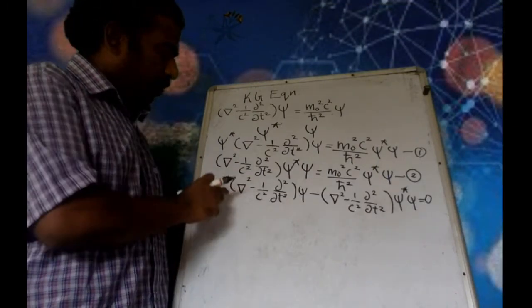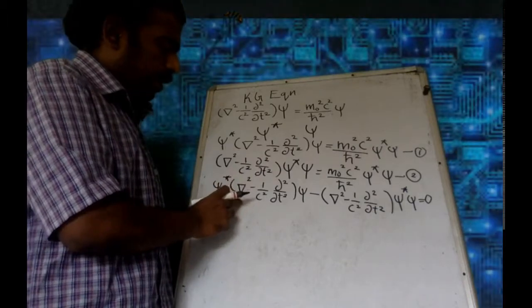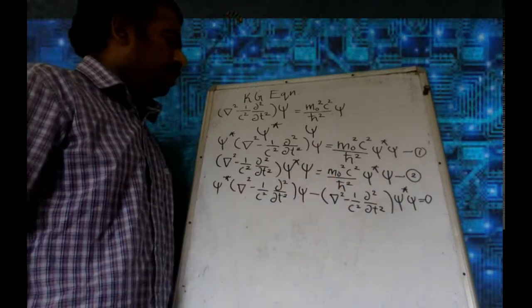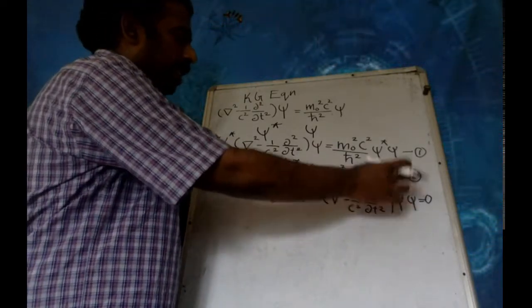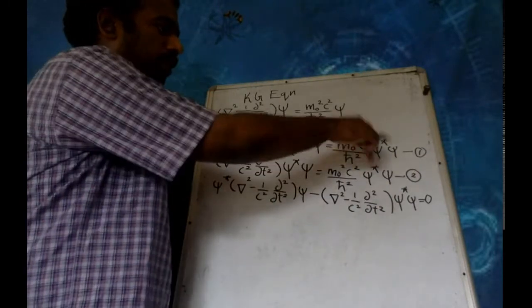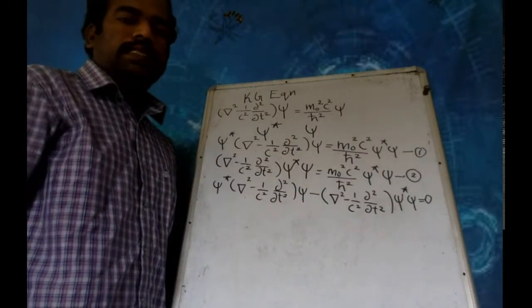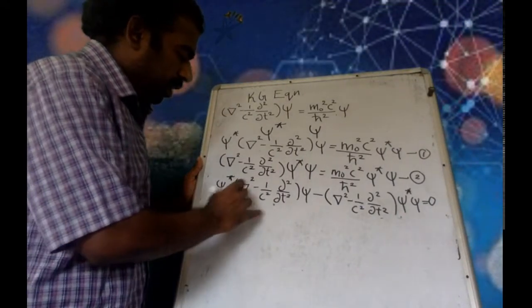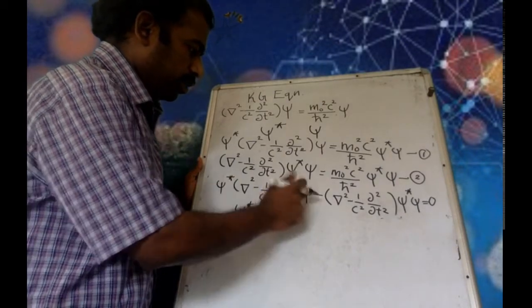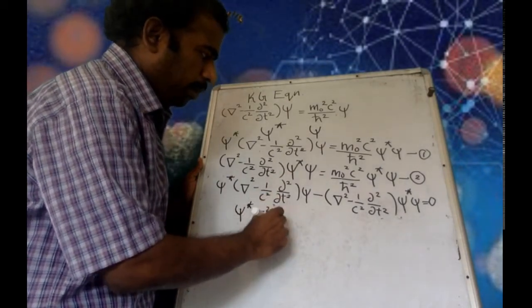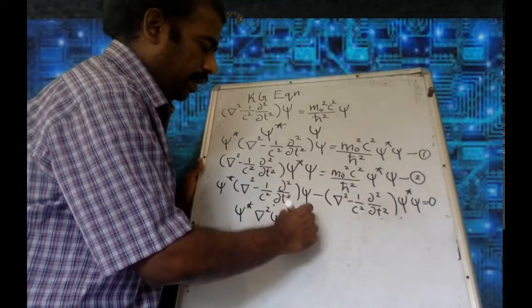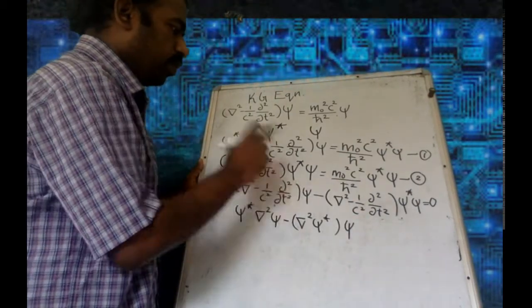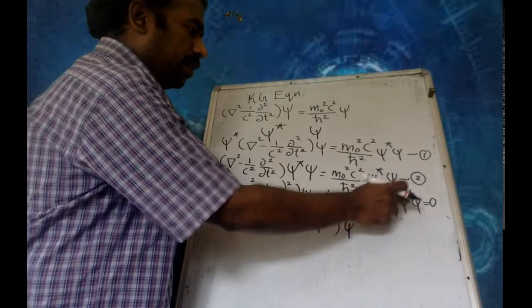Subtraction: equation 1 minus equation 2. The del-squared by del-squared terms give: psi-star del² psi minus del² psi-star · psi equal to zero, because the RHS terms are equal and cancel to zero.